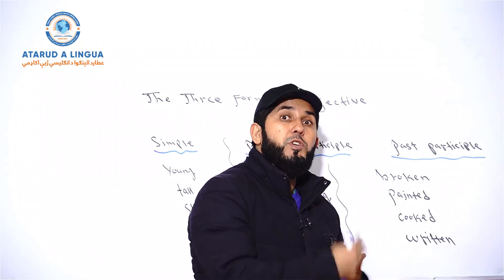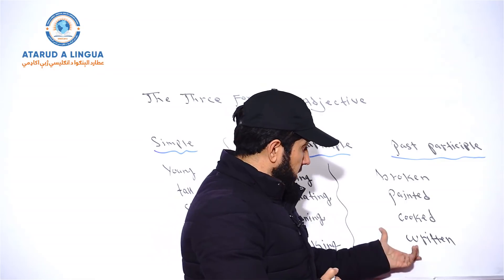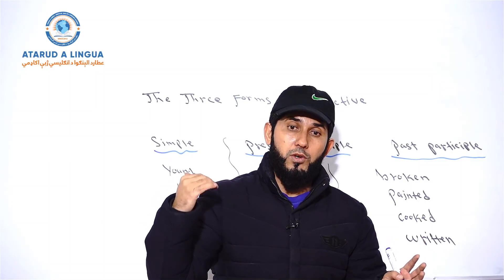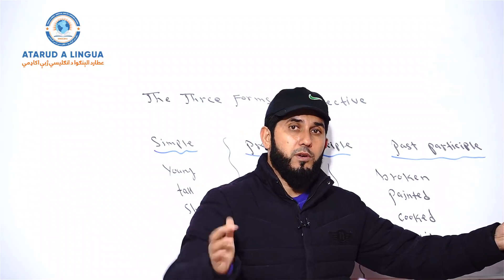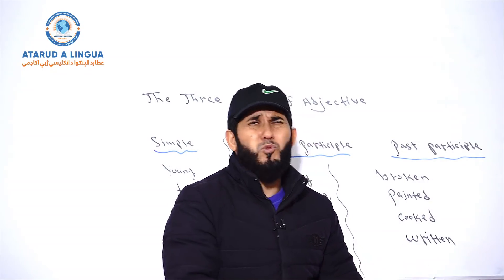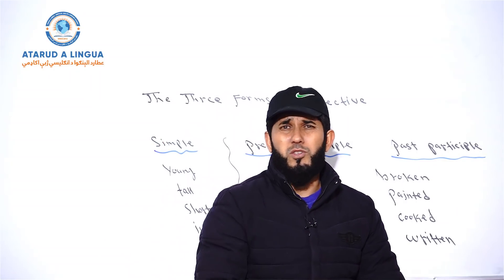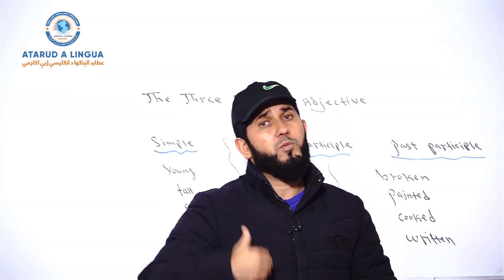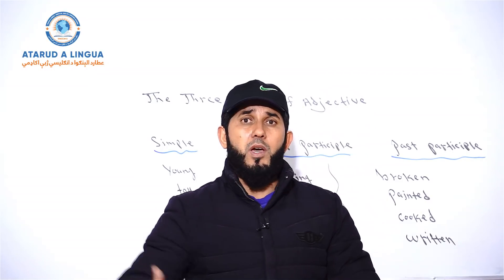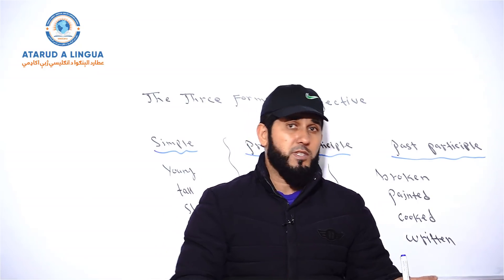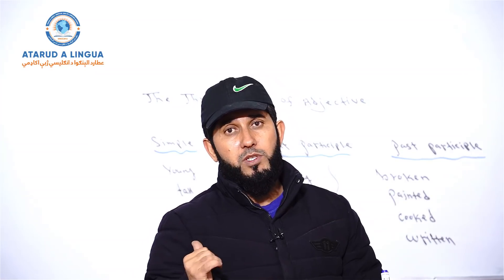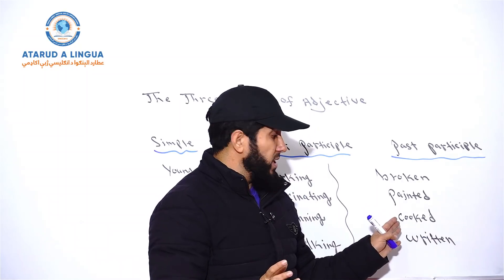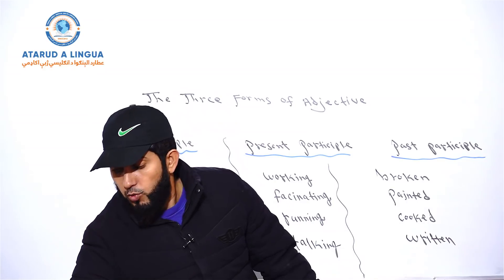If you use it as a main verb, it shows the action of the subject: he has written a letter, he had written a letter, he will have written a letter. In passive form across all 12 tenses: a letter is written by him, a letter was written by him, a letter will be written by him, a letter is being written by him, a letter has been written by him, a letter had been written by him, a letter will have been written by him — even in perfect continuous tense: a letter has been being written by him, and so on through all 12 tenses.